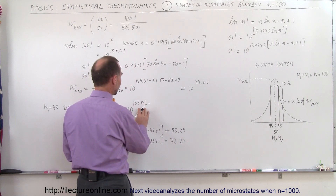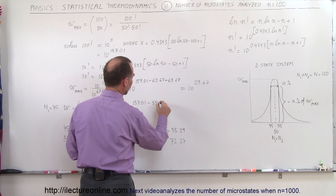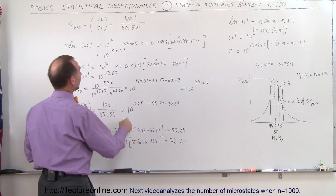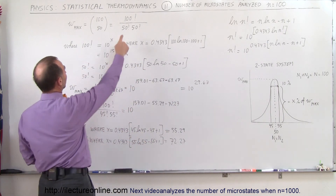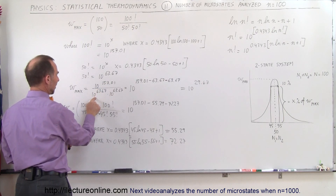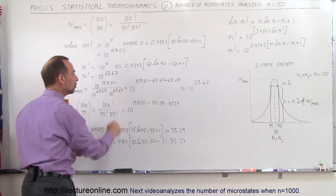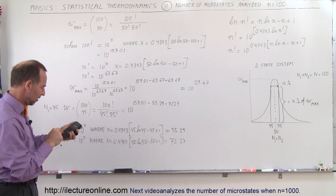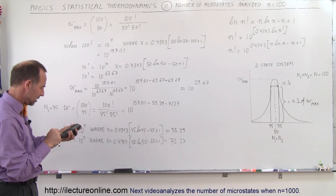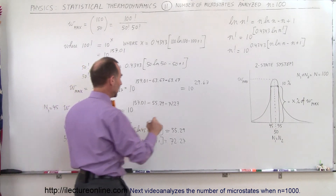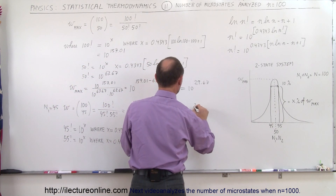So now we have 10 to the 157.01 divided by 10 to the 55.29 and divided by 10 to the 72.27. Computing 157.01 minus 55.29 minus 72.27 gives us 10 raised to the 29.45 power.